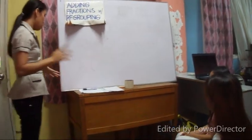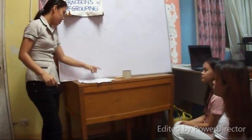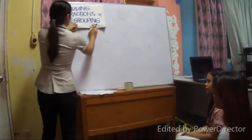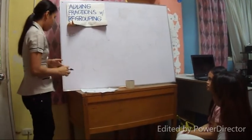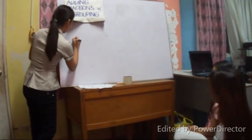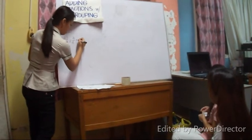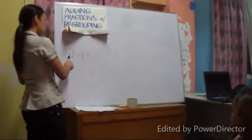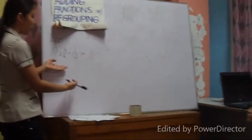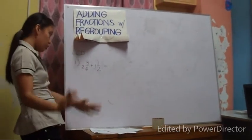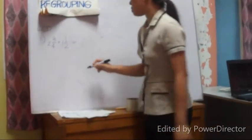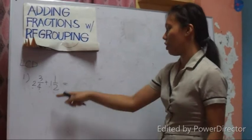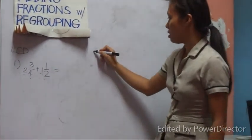Adding fractions with regrouping is so easy. The only difference is that the denominator is different, so what we need to do is find the LCD — the least common denominator. Let's solve the first problem: 2 and 3 fourths plus 1 and 1 half. I will show you first how to do it. Since 4 and 2 are different, we need to find the LCD, and the least common denominator is 4.